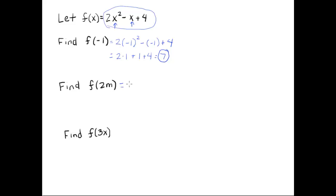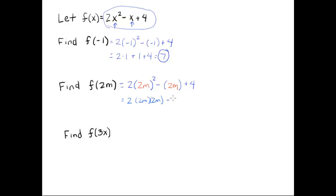In this next one, we need to plug in 2m. Wherever I see an x, I'm going to put a set of parentheses. It's really helpful to put parentheses around wherever you see an x when plugging in something like a negative number or 2m. So we have 2 times 2m squared minus 2m plus 4. I need to square both the 2 and the m, so I'm doing 2m times 2m. Multiplying all those 2's gives 8m squared minus 2m plus 4.